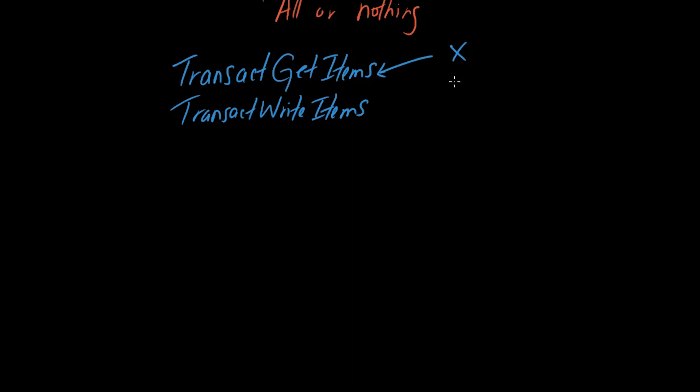That is the use case of GetItems, and it's particularly useful for things like financial transactions. If you need to know the balance of two different accounts at the same time, maybe you're trying to do some transfers or something like that, that's the kind of scenario that TransactGetItem solves for.